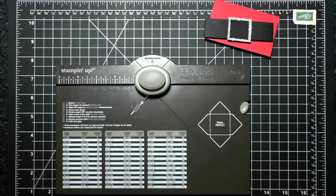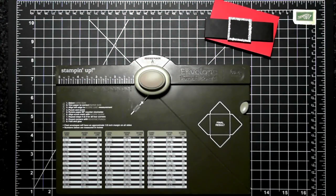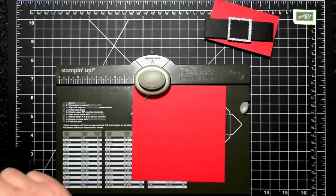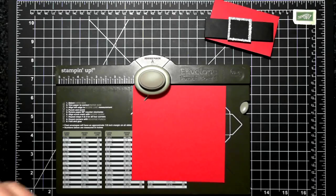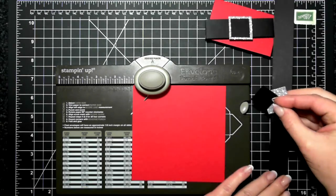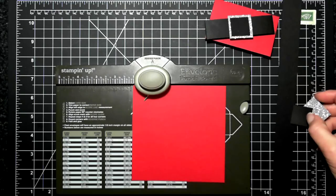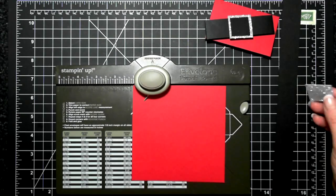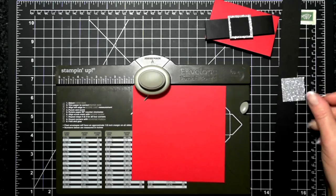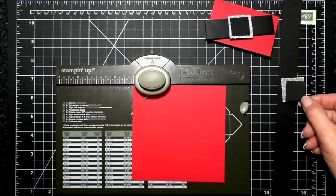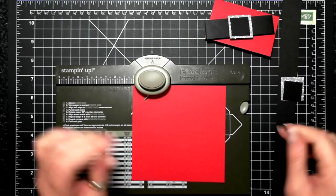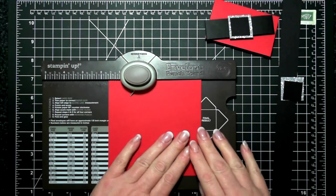It is using the envelope punch board and a piece of real red cardstock at 5 by 5 inches. I'm just getting out the little bobson pieces here. You're going to need a belly band that's about an inch wide, then a silver square at 1 and 1/4 by 1 and 1/4, and a black square at 1 by 1.